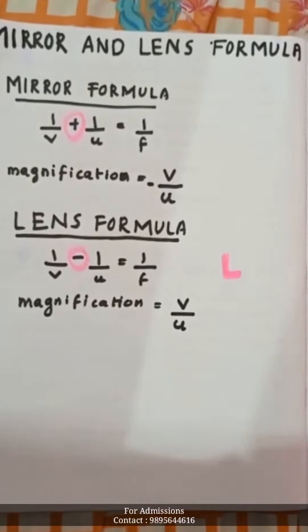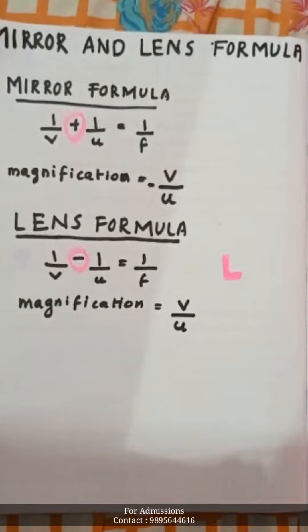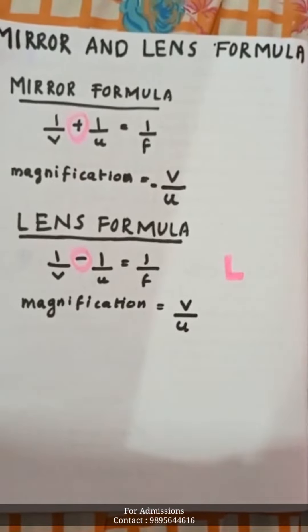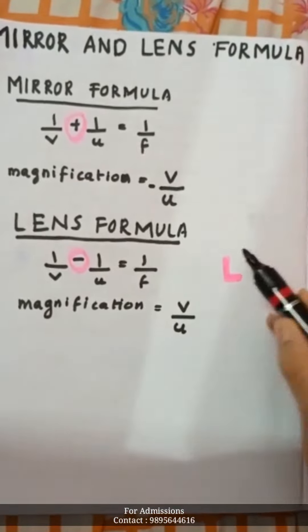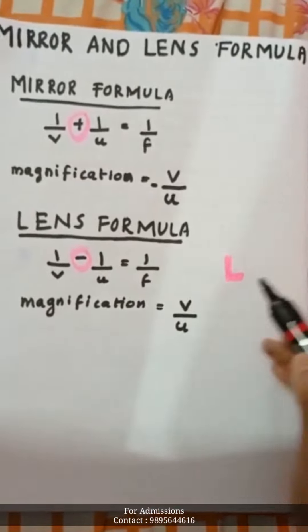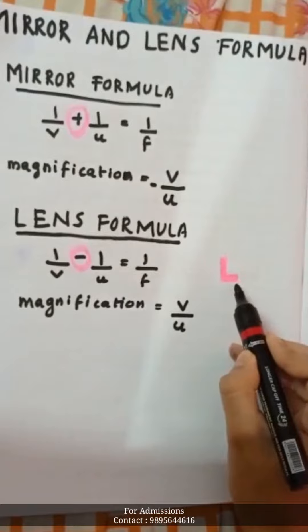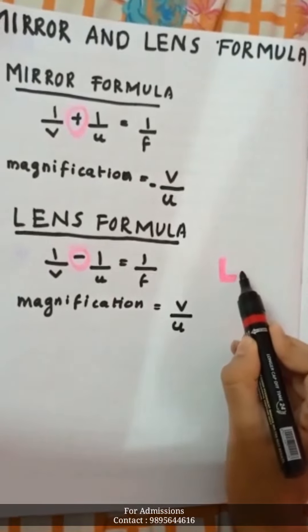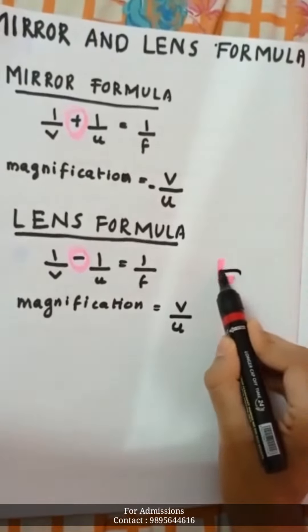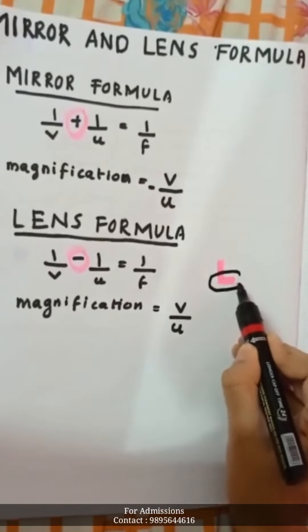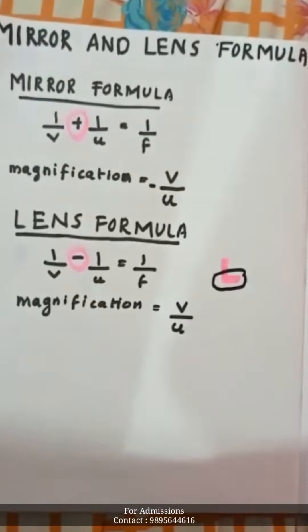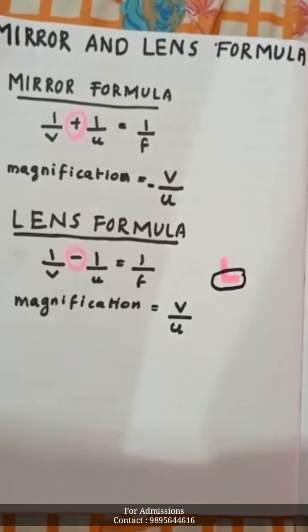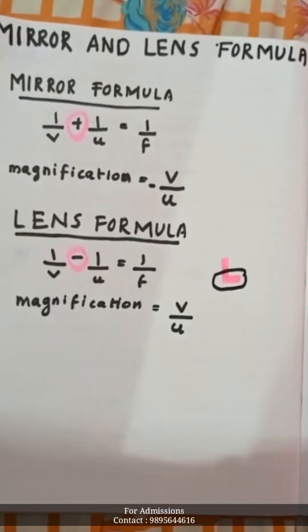We are going to distinguish the lens formula. The lens formula has a minus sign — that is the key difference to remember.